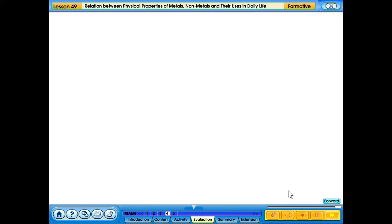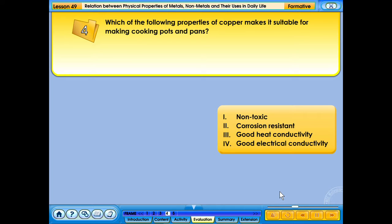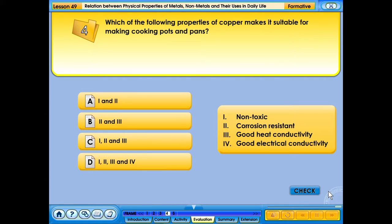Which of the following properties of copper makes it suitable for making cooking pots and pans? 1. Non-toxic. 2. Corrosion resistant. 3. Good heat conductivity. 4. Good electrical conductivity. That's not right. Please try again. Your answer is correct.